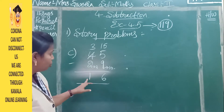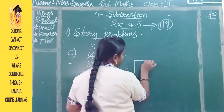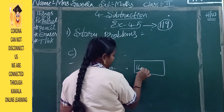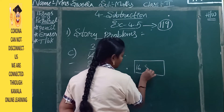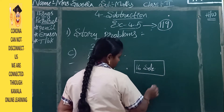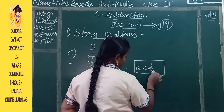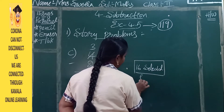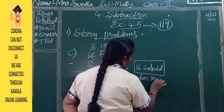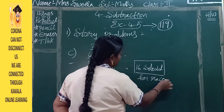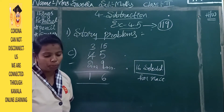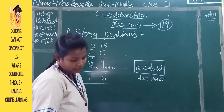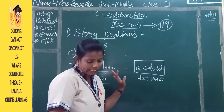Write in the box: 16 selected for race. If there is not enough space, you can write it below — no problem. This is about question C1.